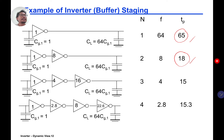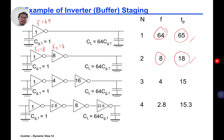The F for each gate is shown here: for one inverter F equals 64; for two inverters F1 equals 8 and F2 equals 8. You have the delay for each one. In the end it's 8 plus 8 plus 2, times TP0.